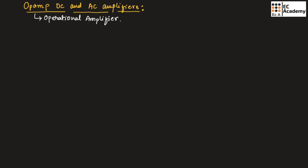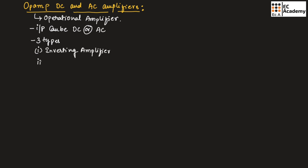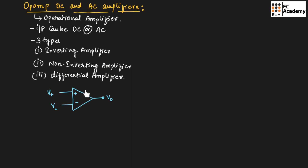In an operational amplifier, the input can be a DC signal or an AC signal. If the input is DC, then it will act as a DC amplifier, and if the input is AC, it will act as an AC amplifier. There are three types of circuits when we use op-amp as an amplifier: first one is inverting amplifier, second one is non-inverting amplifier, and third one is differential amplifier.